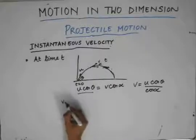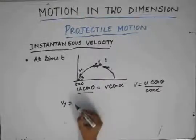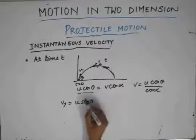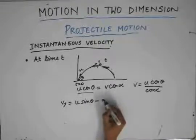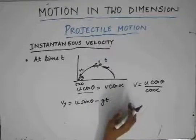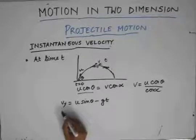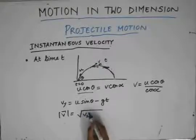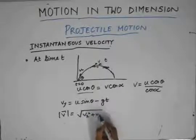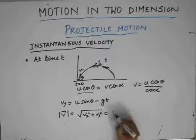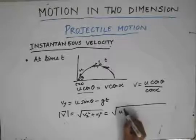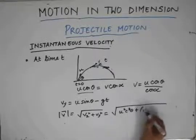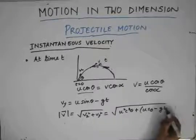The velocity in the y direction, since it is uniformly accelerated motion, can be written as vy = u sin θ − gt, where u sin θ is the initial velocity in the y direction. The resultant velocity is given by the square root of vx² + vy², which equals the square root of u² cos² θ + (u sin θ − gt)².